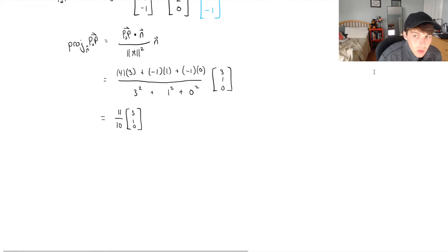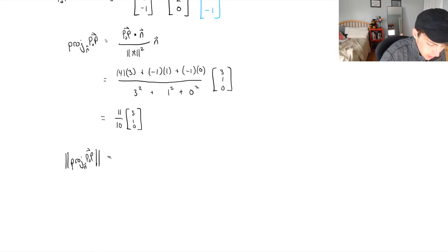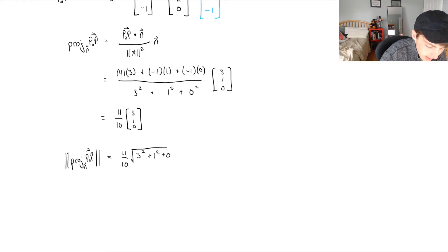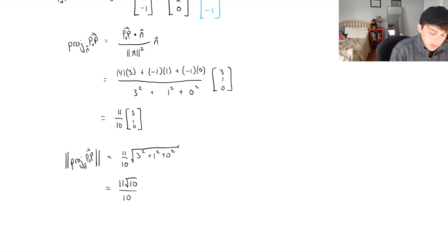Finally, we find the norm of this projection vector. We pull out 11/10 and compute √(3² + 1² + 0²) = √10. So the shortest distance is 11/10 · √10 = 11√10 / 10. This is the fully simplified final answer for the shortest distance.